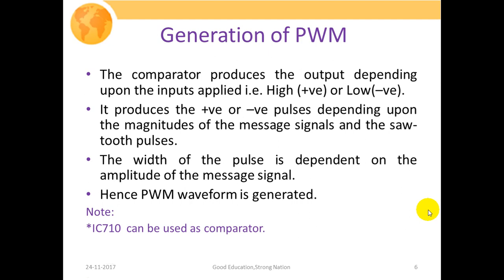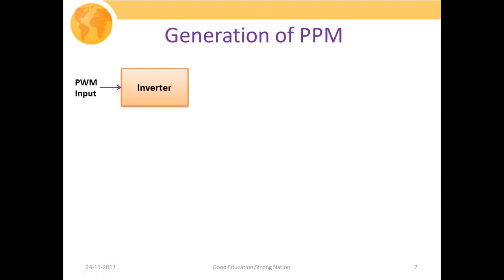The comparator produces output depending upon the input applied — either high or low, positive or negative — depending upon the magnitude of the message signal and the sawtooth waveform. If the magnitude of the message signal is greater than the carrier pulse magnitude, it generates a positive pulse; if less, it generates a negative pulse. The width of the pulse is dependent upon the amplitude of the message signal. As a comparator, IC710 can be used.